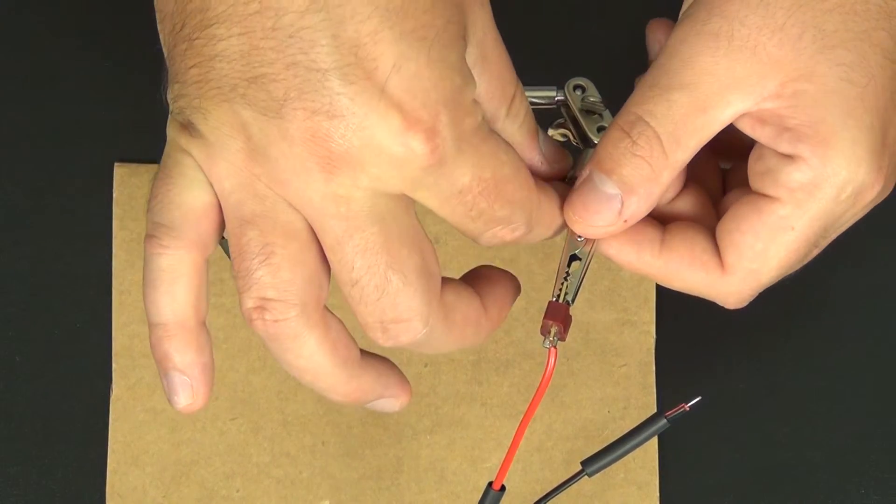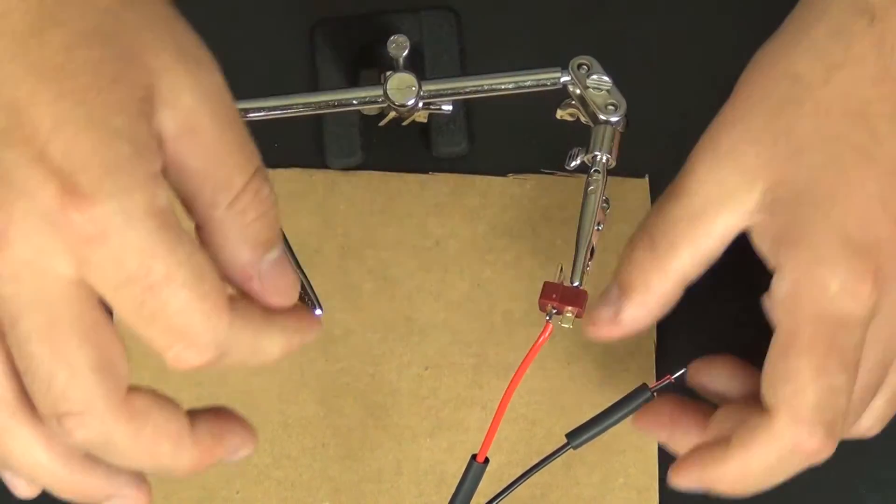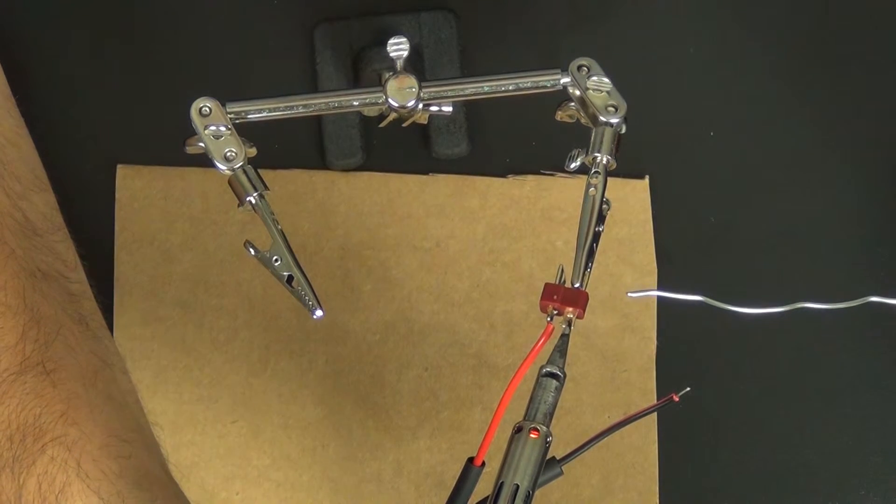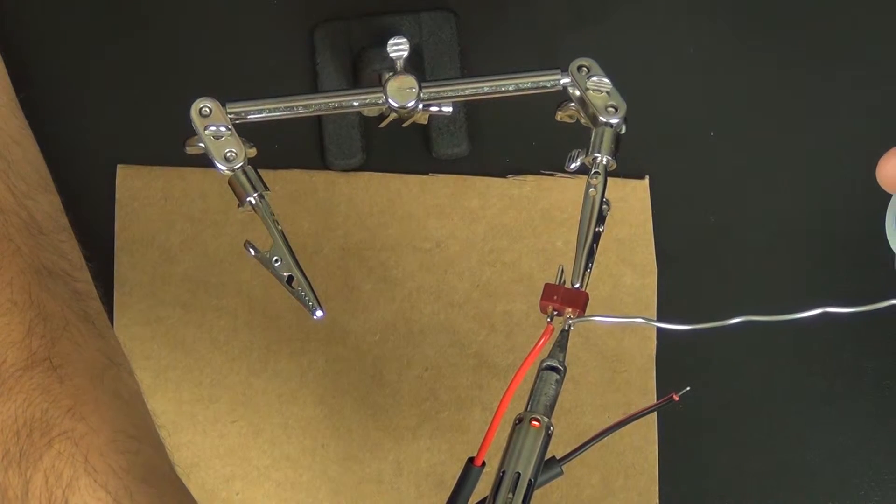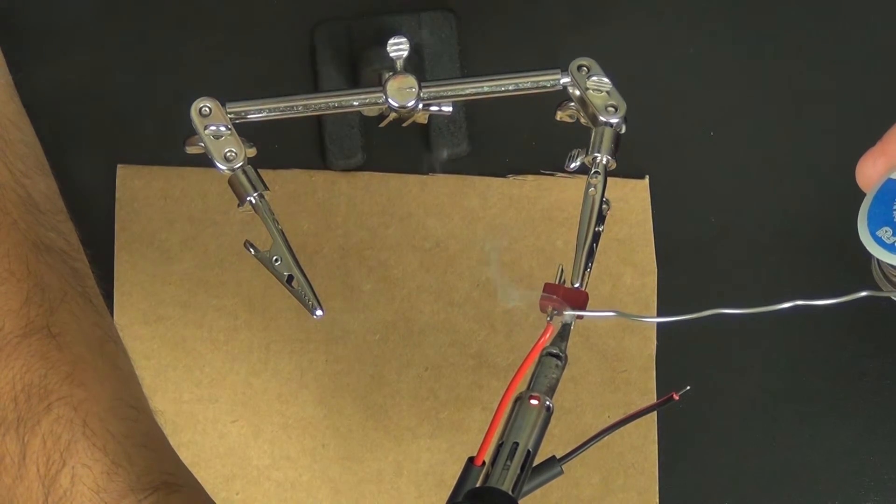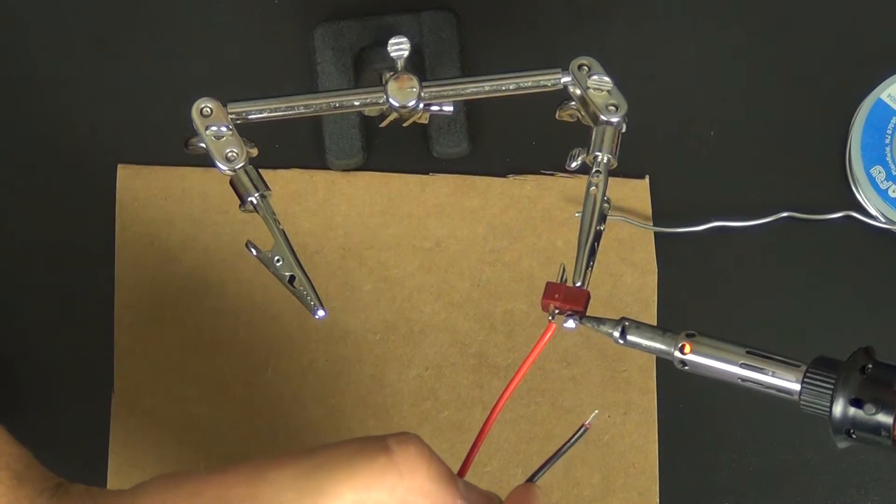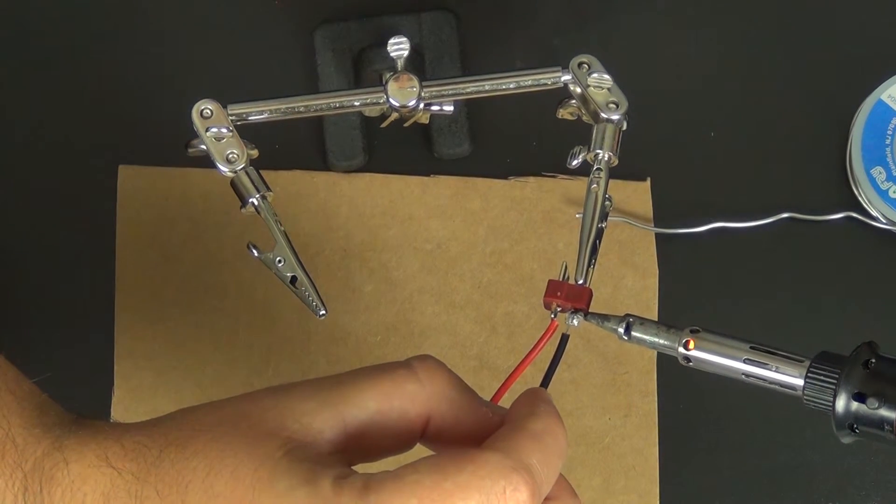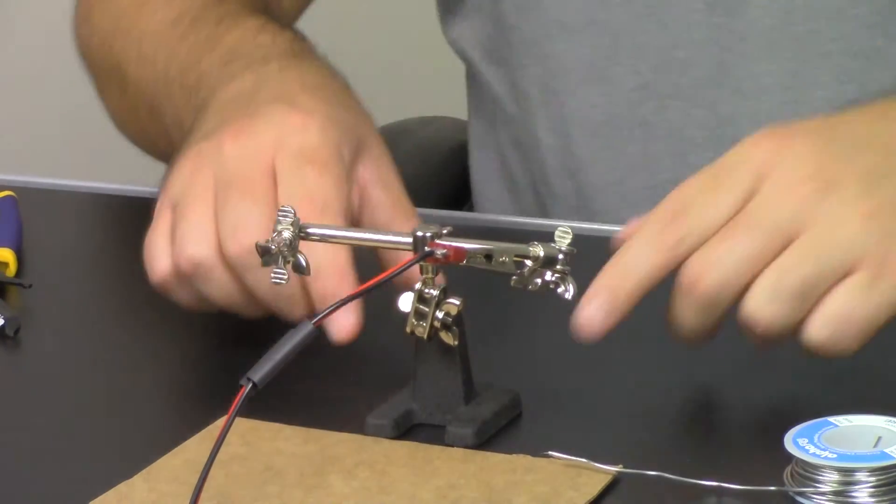We are now going to turn our little tool here to allow us the access to the other side, and we're going to do the same thing. Now we're going to attach the black lead. Alright. So the connection looks good.